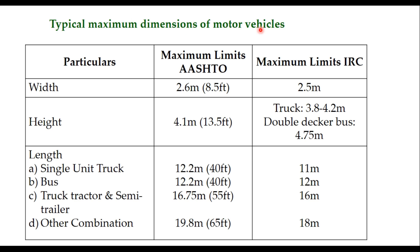Typical maximum dimensions of motor vehicles as per AASHTO and IRC: width is 2.6 meters as per AASHTO and 2.5 meters as per IRC. Maximum height for a truck is 3.8 to 4.2 meters, and for a double decker bus it can be 4.75 meters. Length varies with the type of truck — for a single unit truck it is 11 meters, for a bus 12 meters, for a tractor trailer and semi-trailer 16 meters, and for other combinations 18 meters. As per IRC, the maximum length of a vehicle is 18 meters, whereas as per AASHTO it is 19.8 meters or 65 feet.